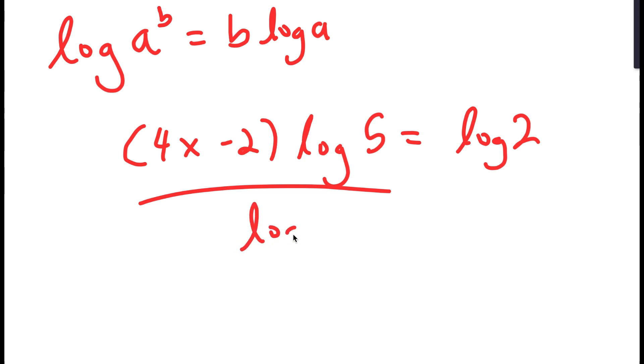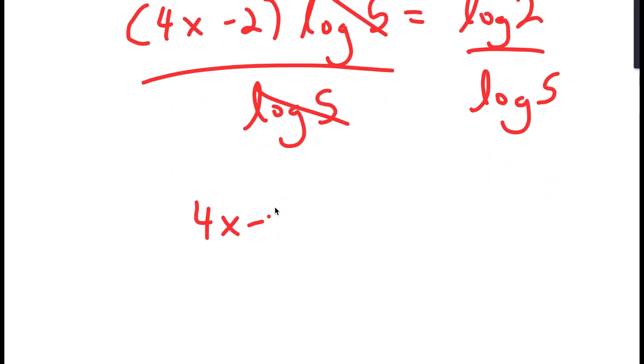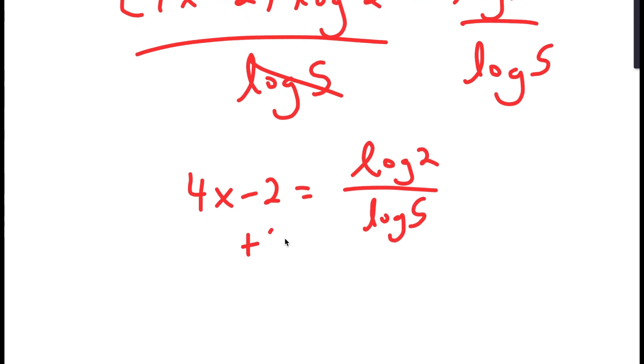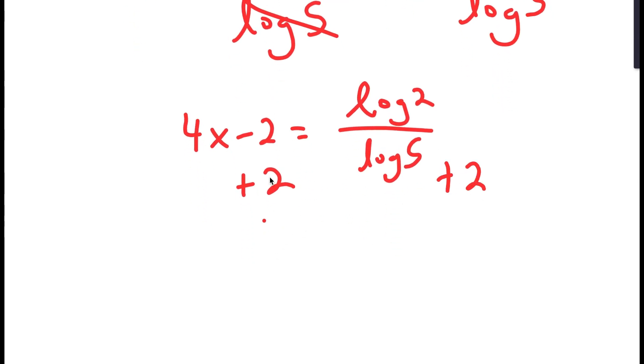And now, I'm going to divide both sides by log 5. So these two cancel out, and I get 4x minus 2 is equal to log 2 over log 5. Now, if I add 2, I get 4x is equal to log 2 over log 5 plus 2.